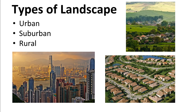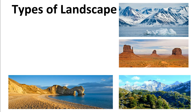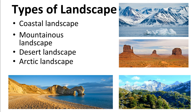Urban, suburban, rural. We have four more types of landscape: the coastal landscape down by the sea and the beach, a mountainous landscape, a desert landscape, and the Arctic landscape. So: coastal, mountainous, desert, and Arctic landscape.